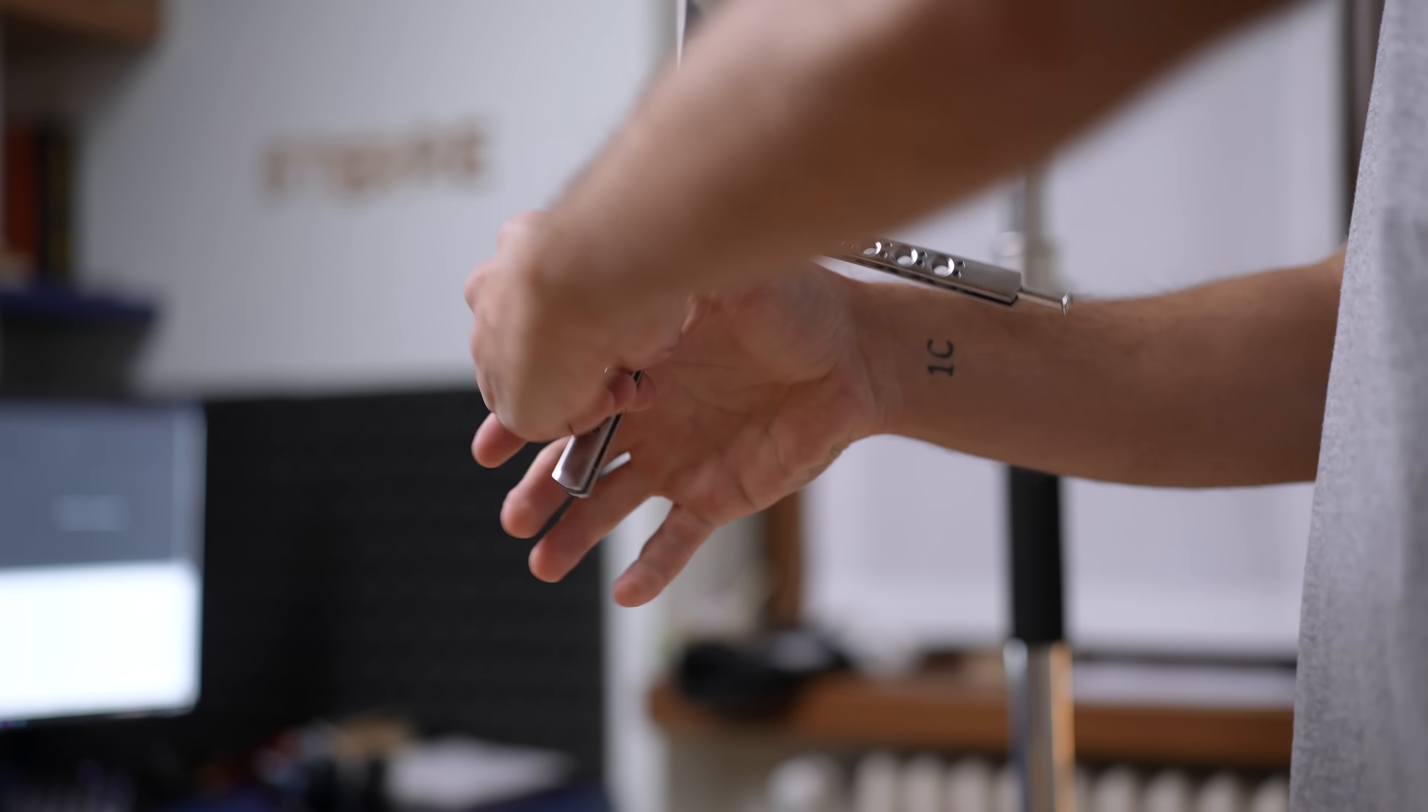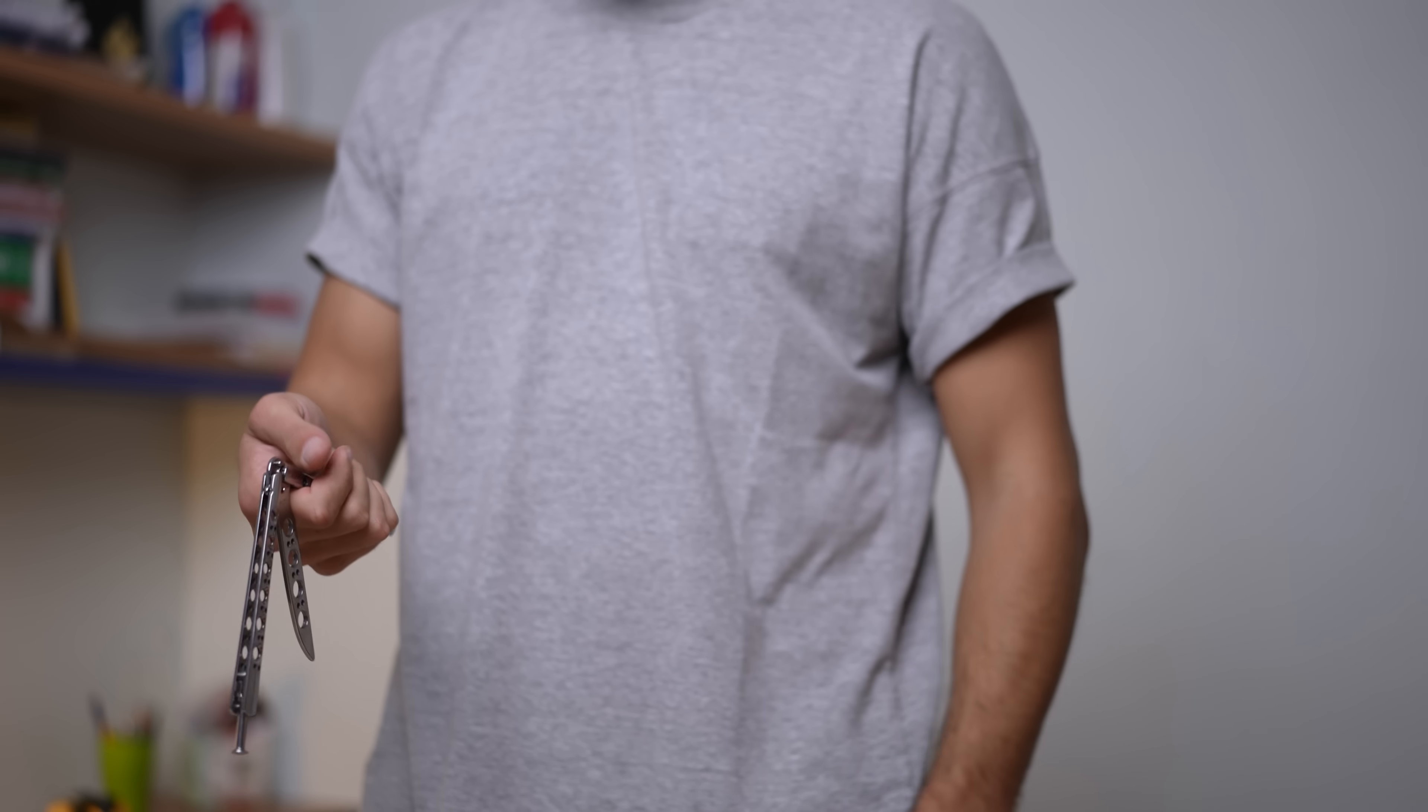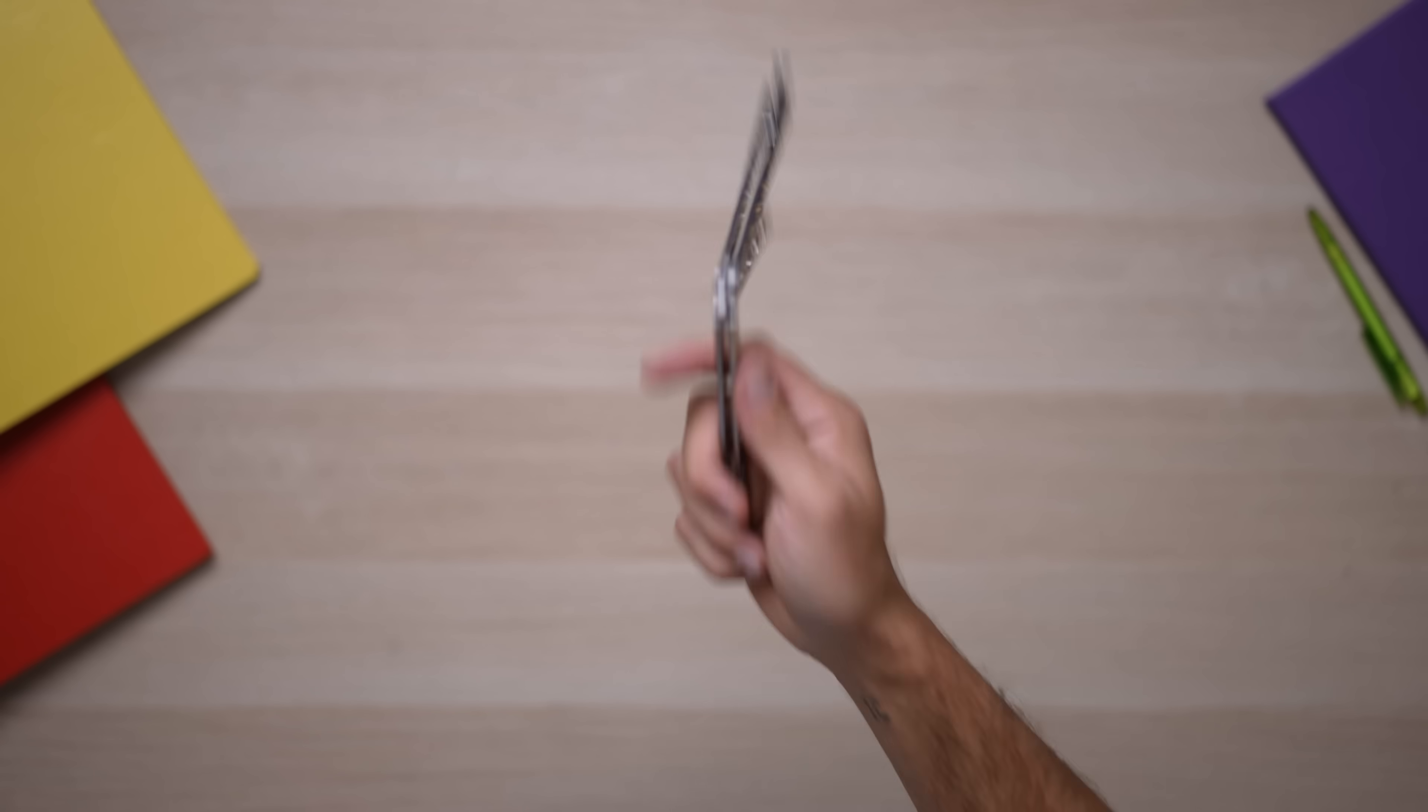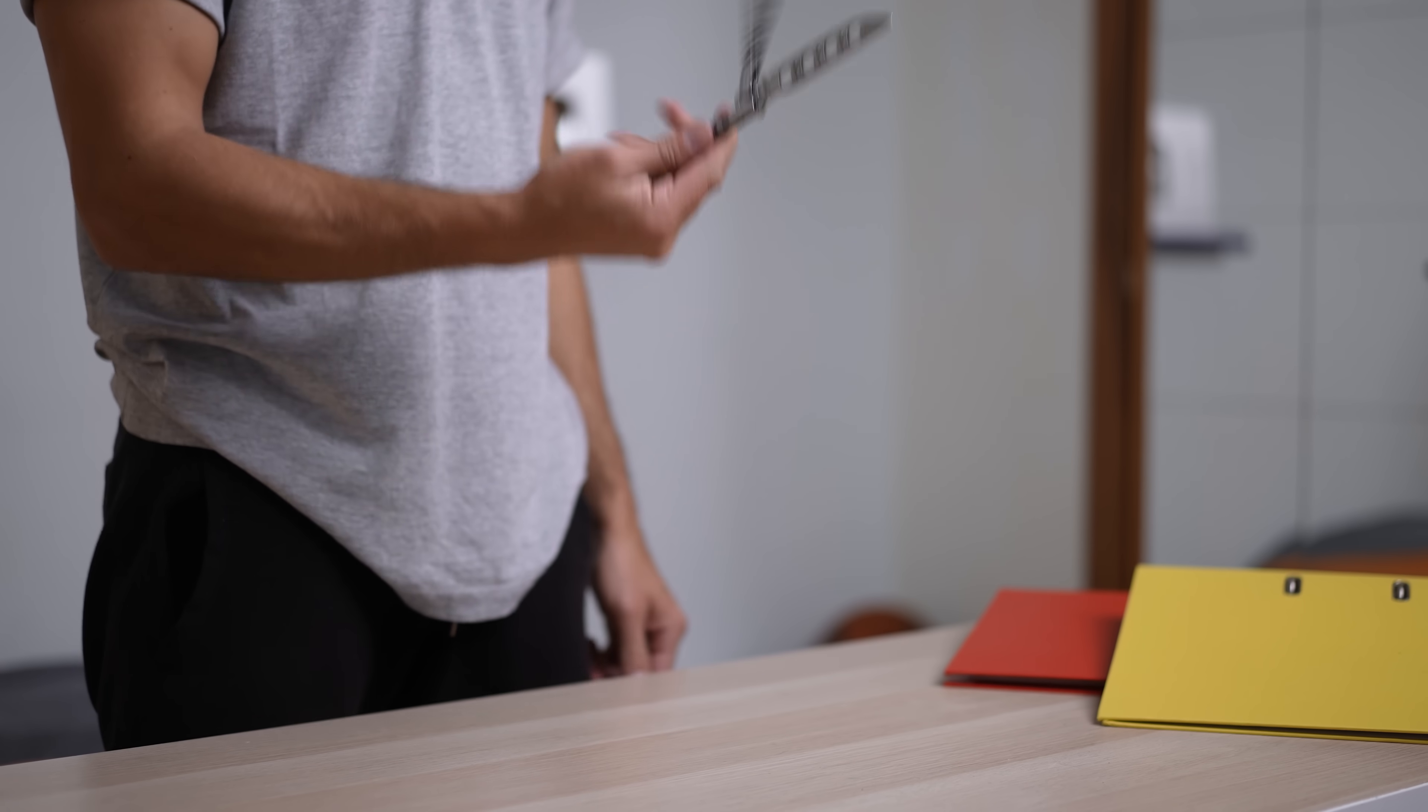At this point release the index finger and let the knife spin until you can catch the safe handle with the other fingers. Then move your thumb away and bring the knife back up. So spin around your thumb, catch with the other fingers and flip the balisong back up.